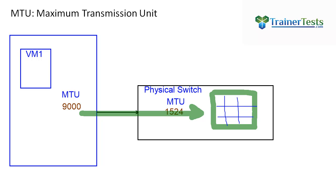This is what occurs when we have a misconfigured or mismatched MTU — fragmentation and reassembly. I always equate this to: let's say I have four guitars and I want to ship those four guitars to a friend of mine who lives in California. So I take those four guitars, package them up in a really big box, all four of them.